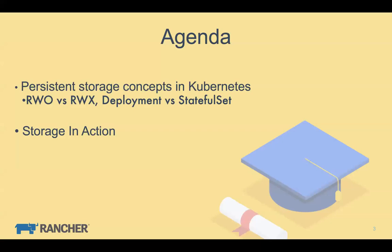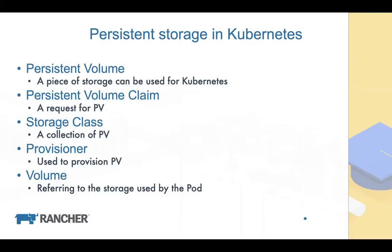The second part of this webinar is a live demo showing how to use persistent storage in Kubernetes. For the demo we're going to use Rancher and Longhorn, which are two open source projects in the Kubernetes area. You're welcome to download them and try them by yourself.